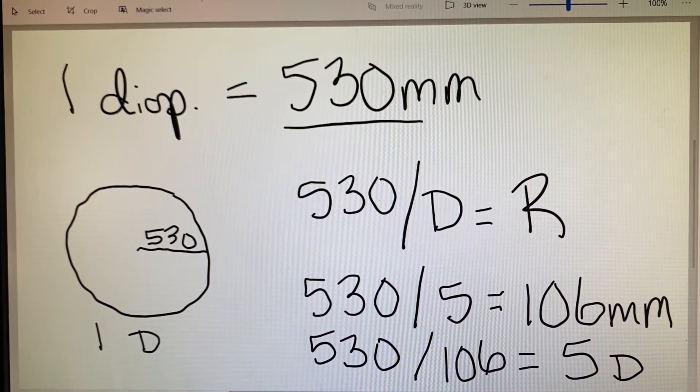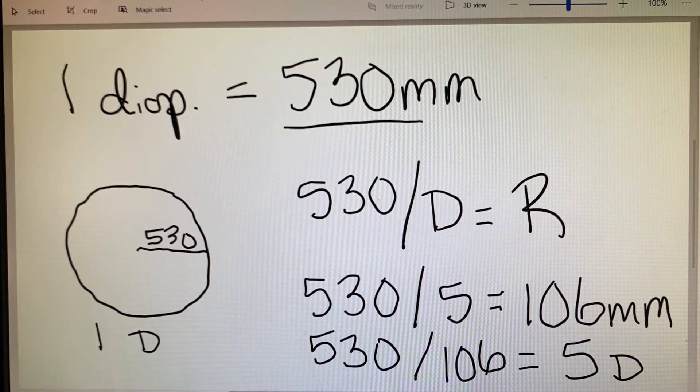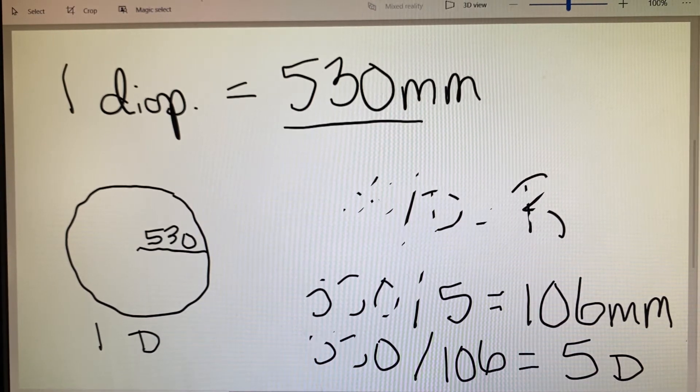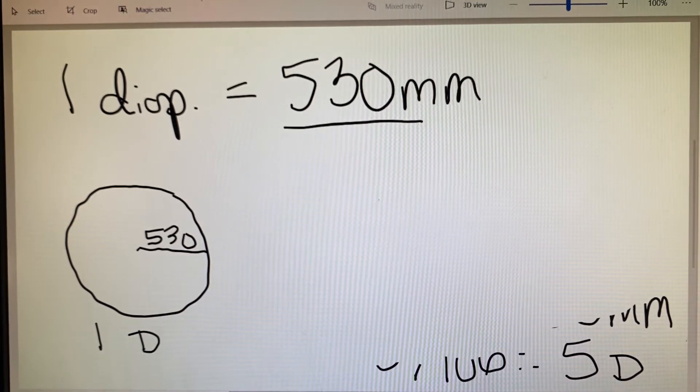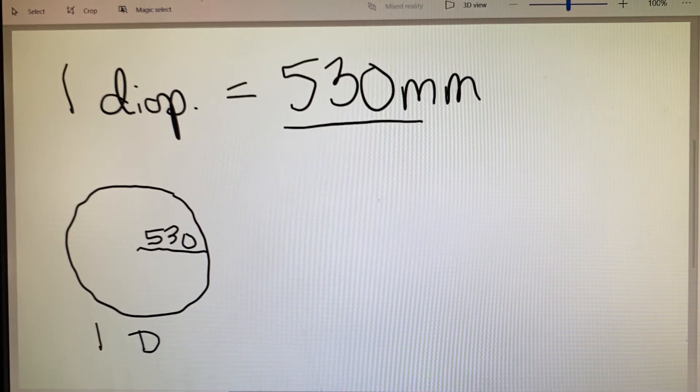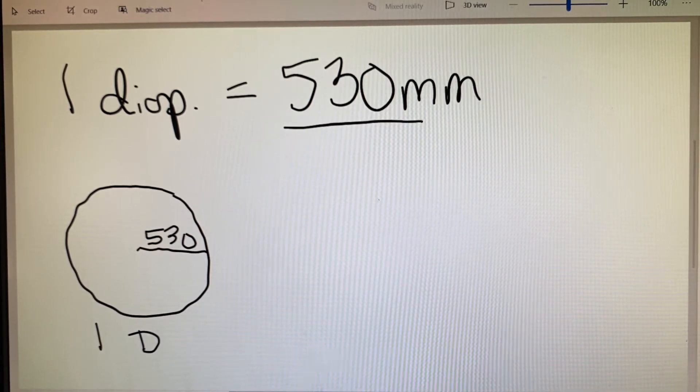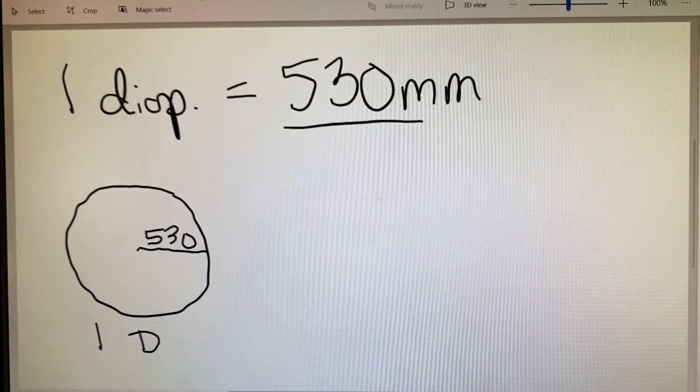So the radius of curvature of a one diopter lens is 530 millimeters. 530 then becomes our rule for the equation to determine either the power of a lens or the radius of curvature. Now in addition to the equation, one of the other important pieces regarding radius of curvature is that as the radius increases or decreases, it actually changes the power of the lens.